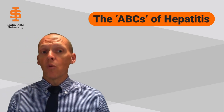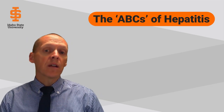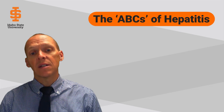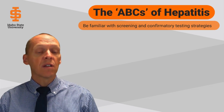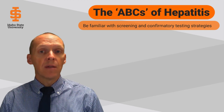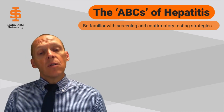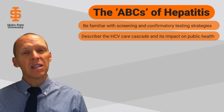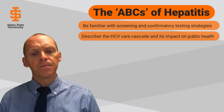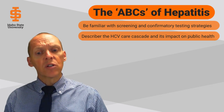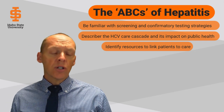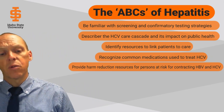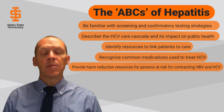The main objectives that we're going to cover are fairly broad. First, we're going to be talking about some of the regional and national epidemiologies of hepatitis A, B, and C. We'll talk about the different screening and confirmatory testing between the three different types of hepatitis. And then we're going to talk specifically about hepatitis C and the hepatitis C care cascade and its impact on public health. We'll also talk about different resources to link patients to care, discuss common medications for hepatitis C, and look at harm reduction resources for persons at risk for contracting hepatitis B and C.